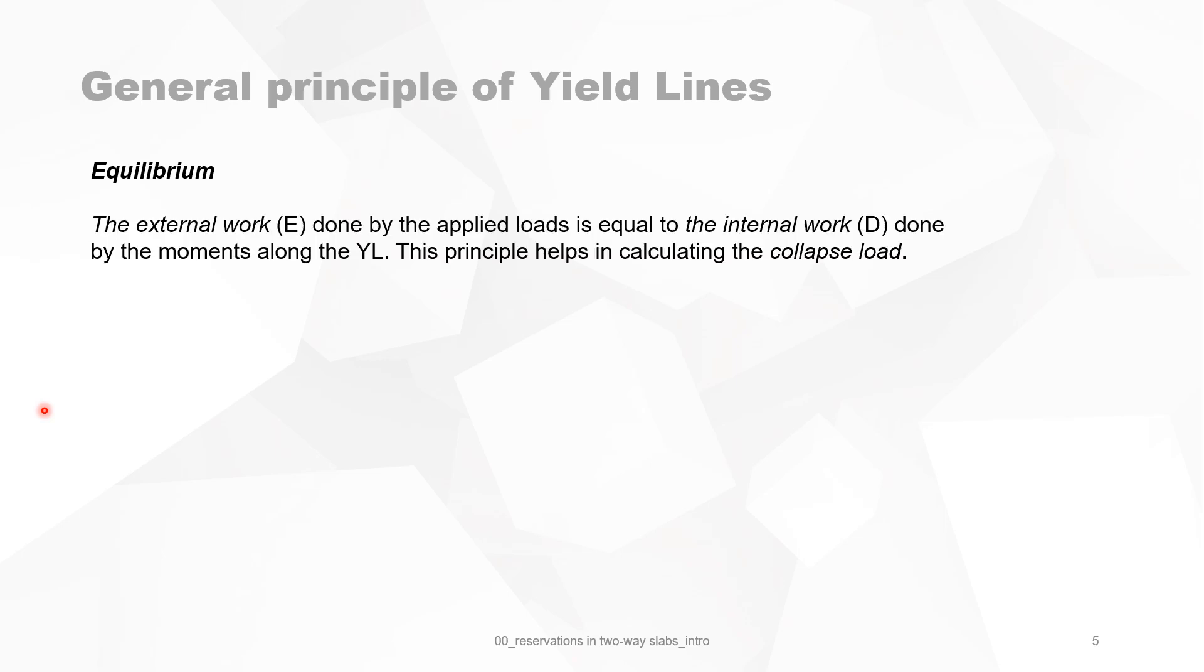Equilibrium: the external work done by the applied loads is equal to the internal work done by the bending moments along the yield line. This principle helps in calculating the collapse load.